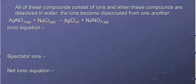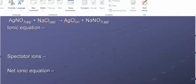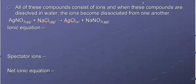If a compound is aqueous, it consists of ions, and when these compounds are dissolved in water, the ions become dissociated from one another. So let's look at this example here, I'm going to write the ionic equation. If anything is aqueous, I simply break it apart into ions.